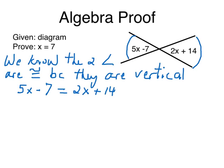Now we just have to use algebra to solve. So I'm going to add 7 to both sides. This is going to cancel out to 0. All I'm left with is 5x on the left. 2x plus 21. 14 plus 7 is 21.